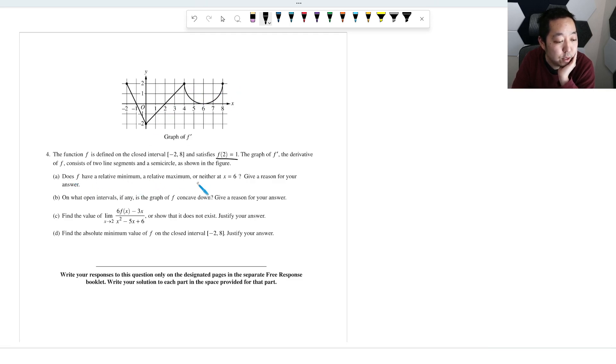Does f have a relative min, relative max, or neither at x equals 6? To have a relative min or max, first we have to decide: is f prime of x equal to 0 or undefined? That's our first establishing. One of those has to be true in order to have a relative max. Well, f prime of 6, let's look at it. Does it equal 0? It does equal, so f prime would be the y value of this. Right at 6, it's equal to 0, so that works.